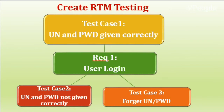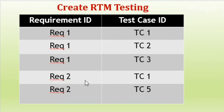In the RTM, we make sure that all requirements are mapped to test cases so that we won't miss any functionalities. Now let us see a one-to-one mapping of requirement ID with test case ID using the user login example. Requirement one is mapped to test cases one, two, and three. Requirement two is mapped to test cases one and five. This is an example wherein N number of requirements are mapped to corresponding test cases. But in a real-time scenario, we have many-to-many relationships mapped — that is the real RTM matrix.